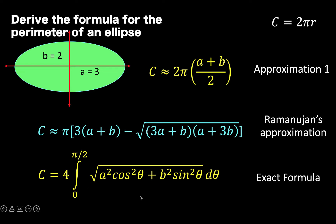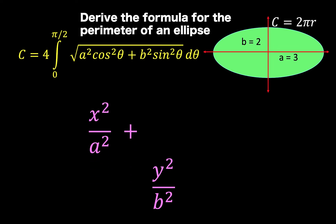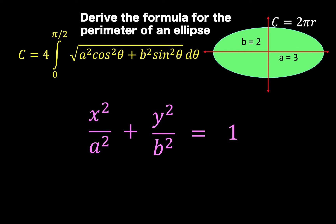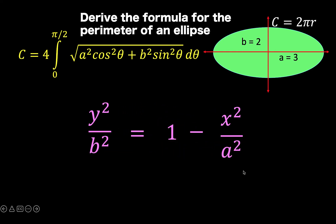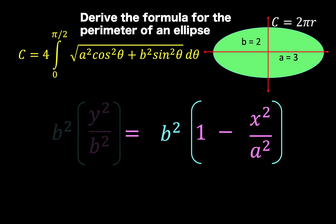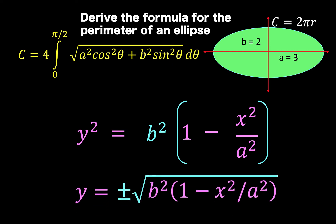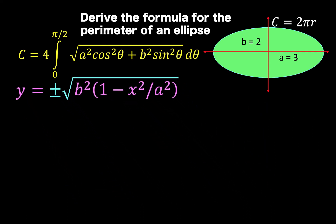In this lesson, let's derive the formula for the perimeter of an ellipse. Let's begin with the standard form of an ellipse: x squared over a squared plus y squared over b squared equals 1. Then let's solve for y by transferring x squared over a squared to the other side and multiplying both sides by b squared. We arrive at y squared equals b squared times the quantity 1 minus x squared over a squared, and taking the square root of both sides gives y equals plus or minus the square root of b squared times the quantity 1 minus x squared over a squared.